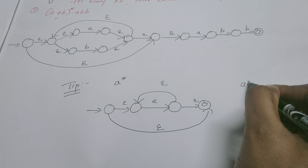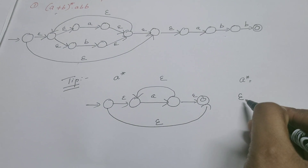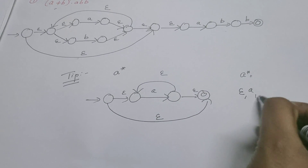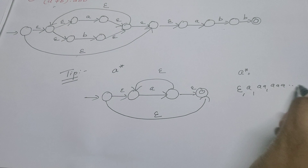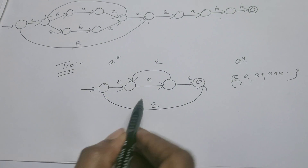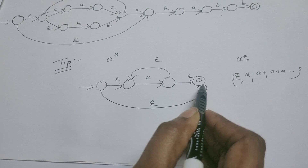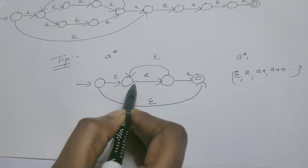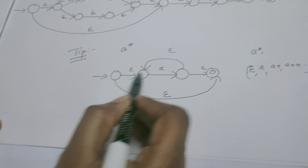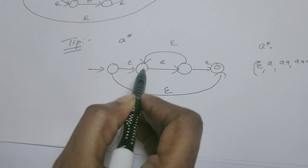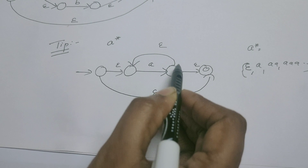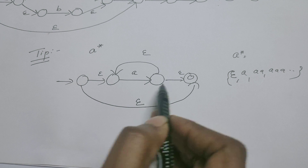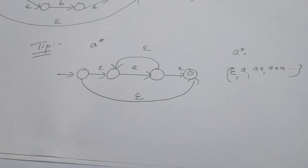So what does a* recognize? The strings represented by this regular expression are epsilon, a, aa, aaa, and so on. This machine could recognize a and reach the final state, or recognize only epsilon via a direct path. For aa or aaa: after reading one a, via epsilon it comes back to the start state and reads the next a. Likewise it can read any number of a's and reach the final state.